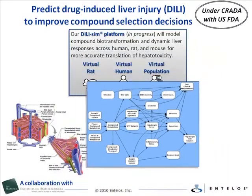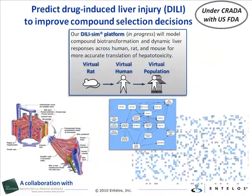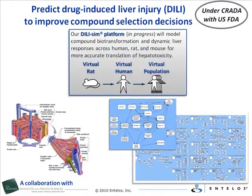Each of these essential processes is represented in more detail in the effect diagram, which includes graphical and mathematical representations of key processes involved in DILI and provides the ability to quickly follow cause and effect links as well as refer to the supporting data and literature.